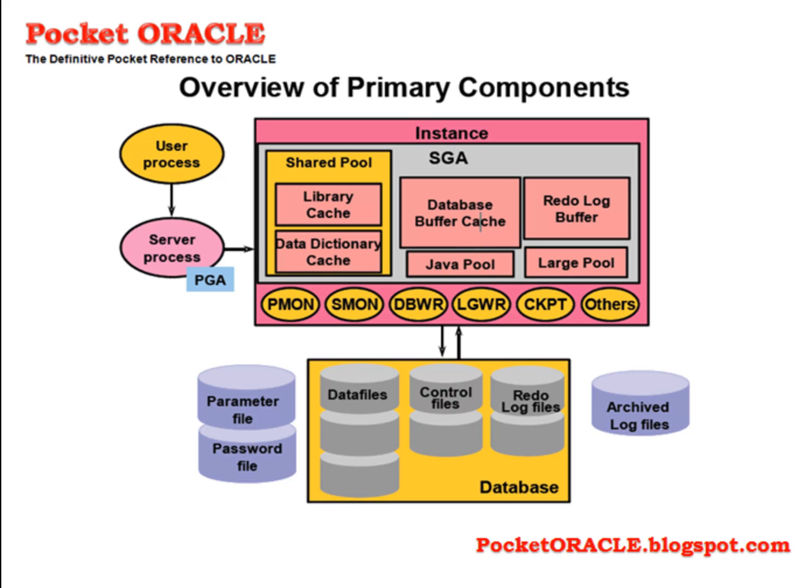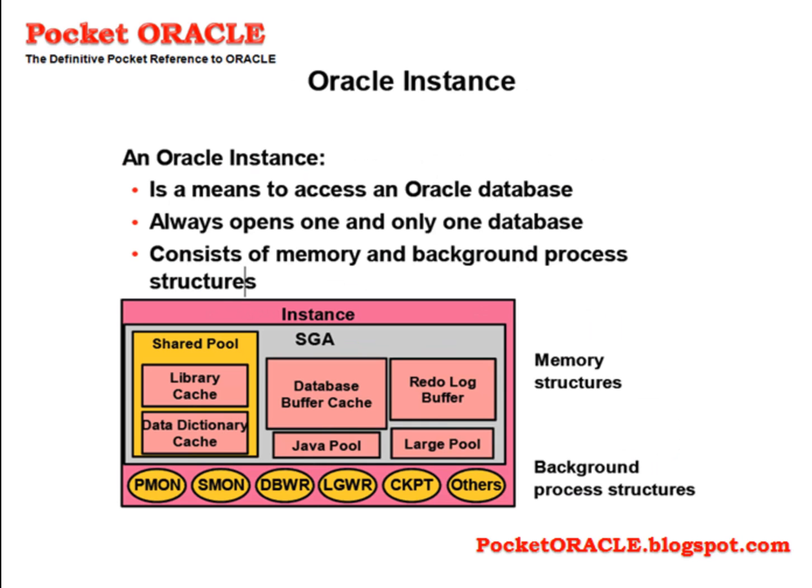By contrast, the database, once created, persists indefinitely until you deliberately delete the files that compose it. An Oracle instance is a means to access an Oracle database; it always opens one and only one database. It consists of memory — the SGA, the fundamental component of an Oracle instance — the PGA, and background process structures. Let's see them in detail.